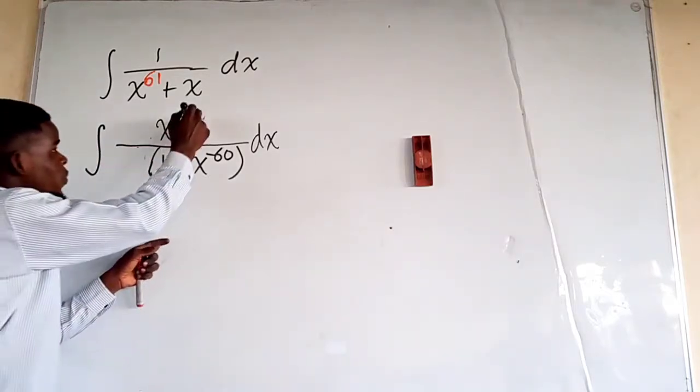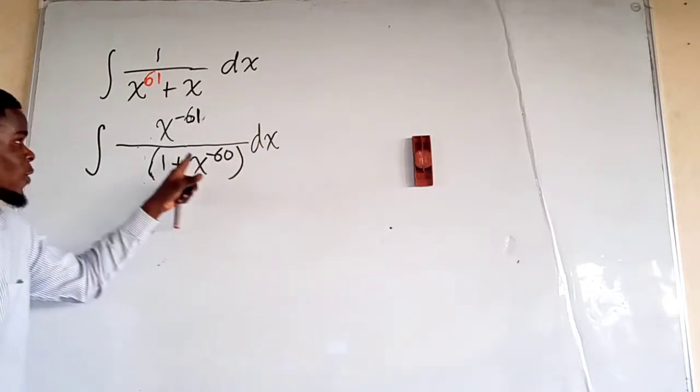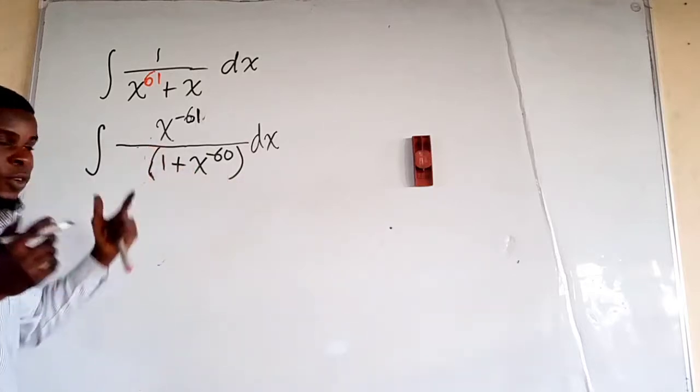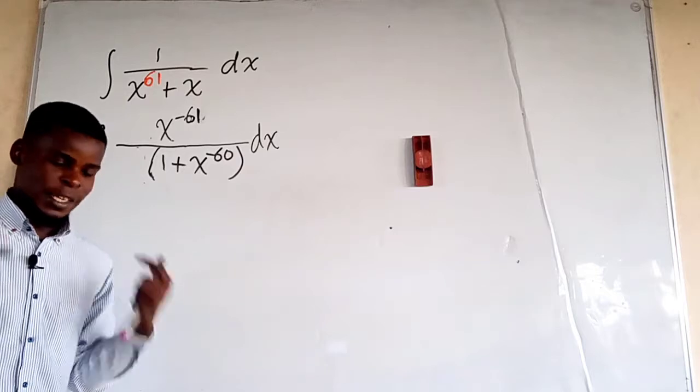And you observe that if you differentiate x to the power negative 60, you're going to have x to the power negative 61. But though we will have some constant together with it, so that is where we would have to make a change of variable.